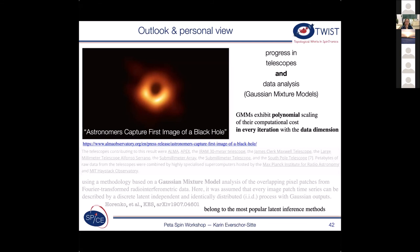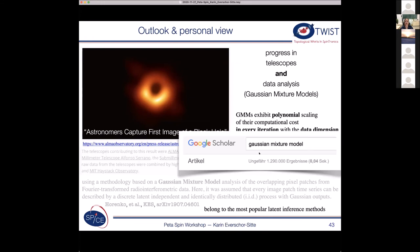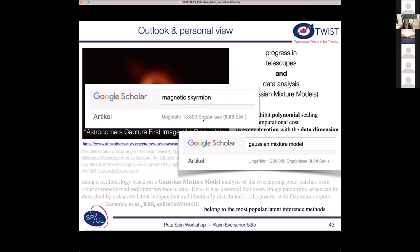And since most of you are probably not an expert on these things, let me just give you a quick overview. If you just type it into Google Scholar, then you find 1.3 million entries. Whereas when you type in a magnetic skyrmion, you find only 14,000.